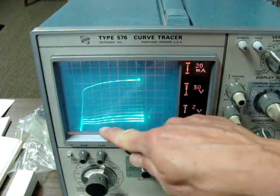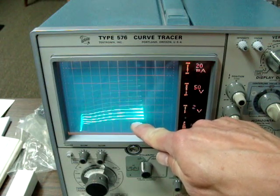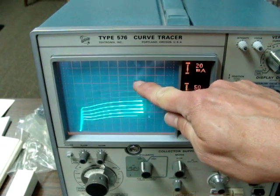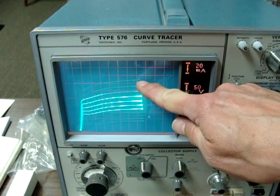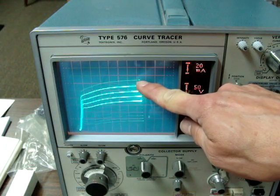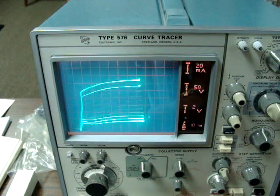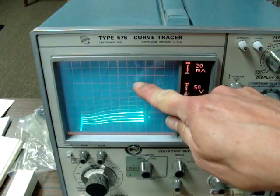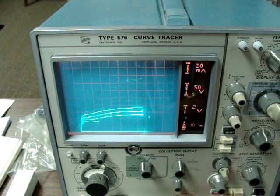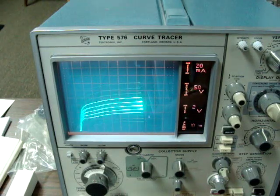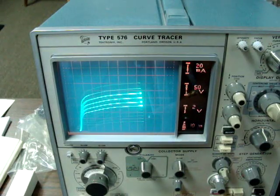This will test from negative 20 grid bias all the way up to zero grid bias where the tube is running full afterburner as hard as it can possibly run. A tube tester will never test a tube this high, but to see if you have a matched pair you need to run the tubes at this type of output.